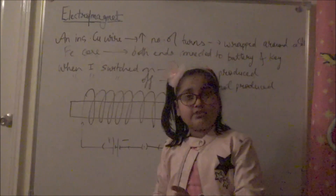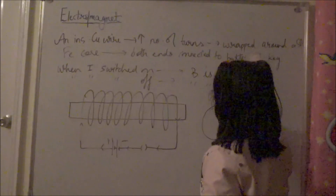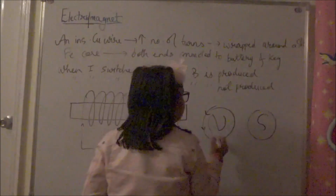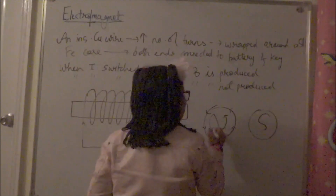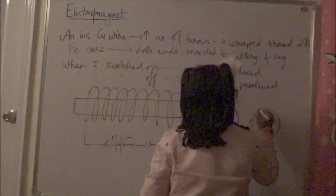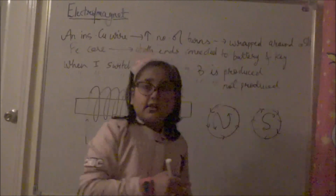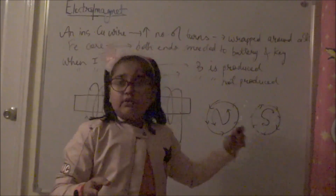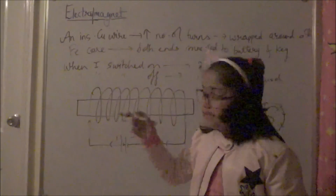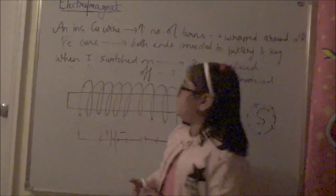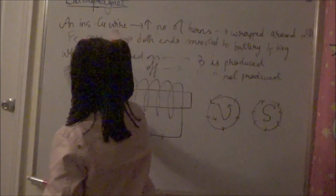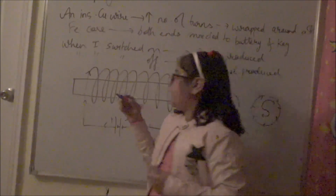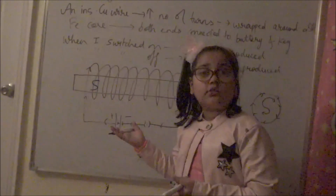To determine the north and south poles, we use the clock face rule. If you look at a face of the electromagnet and the current is flowing anti-clockwise, that face is the north pole. If the current is flowing clockwise, that face is the south pole. So if this end shows clockwise current, it is the south pole, and the other end is the north pole.